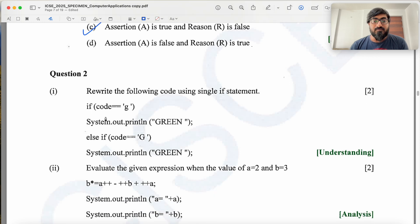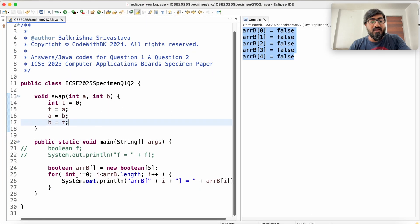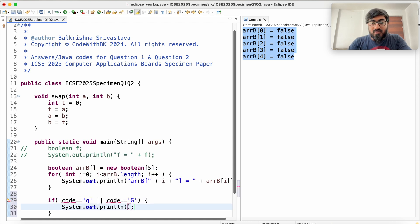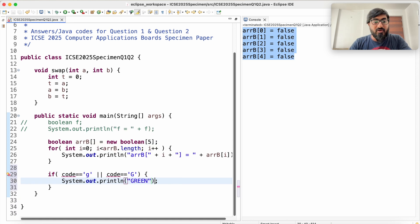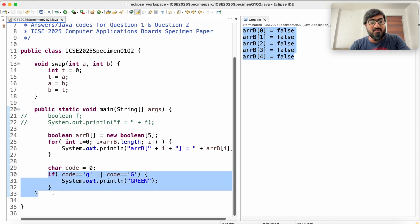Then you come to question 2. Rewrite the following code as single if statement. Since both are printing green, you could do something like: if code equal to lowercase g or code equal to uppercase G, then print green. Code is some value. This is the answer.